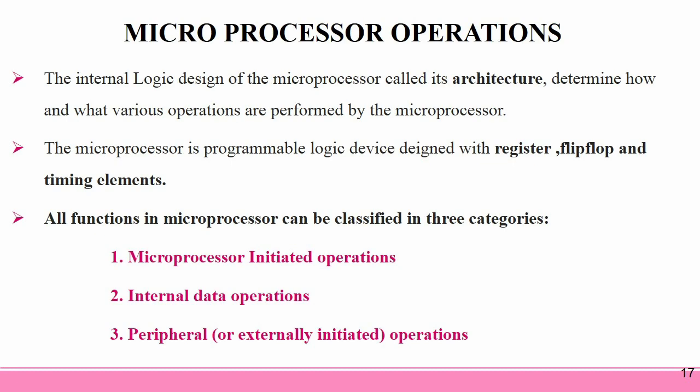Next, I am going to brief about microprocessor operations. The internal logic design of the microprocessor, called its architecture, determines how and what various operations are performed. The microprocessor is a programmable logic device designed with registers, flip-flops, and timing elements. All functions in a microprocessor can be classified in three categories: microprocessor-initiated operations, internal data operations, and peripheral or externally initiated operations.